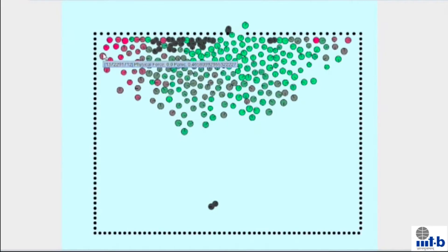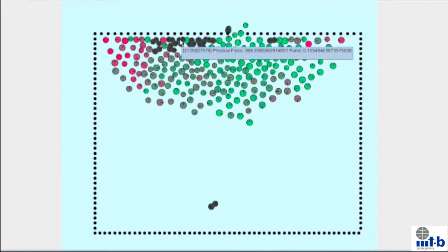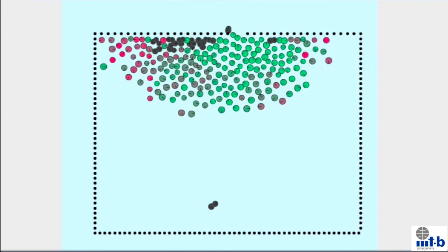By hovering the cursor over an agent, we can get the values of physical force and panic it is experiencing. We can clearly figure out that one exit door is not enough for these many agents in this environment.